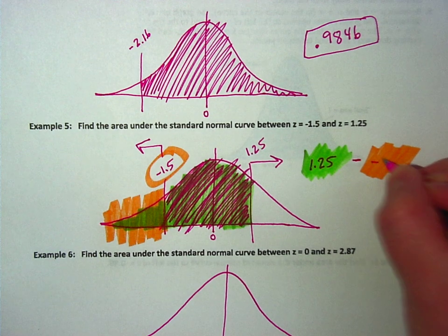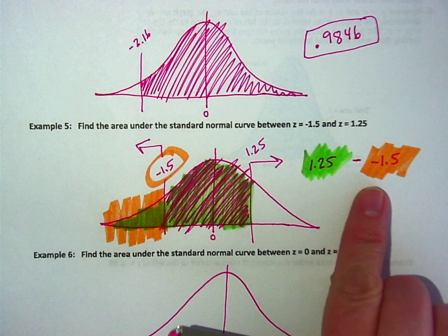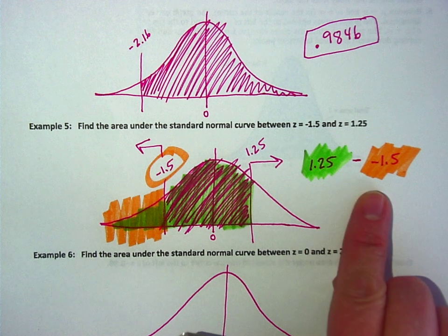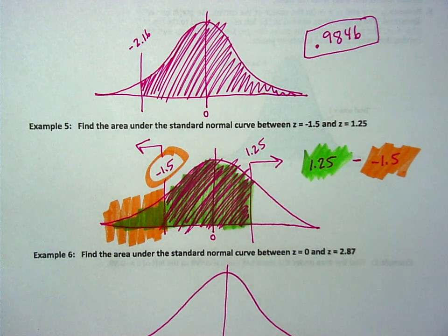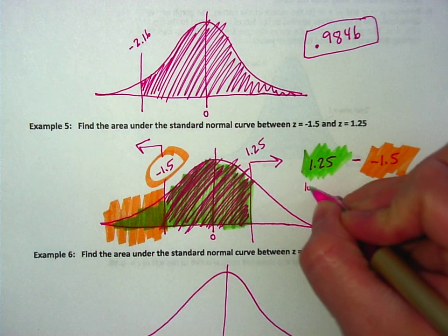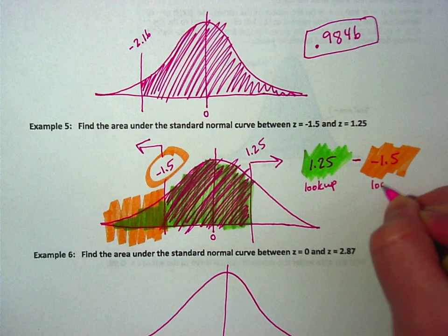So if I take the 1.25 and I subtract the negative 1.5, now again, I can't just subtract these z-scores. I have to look these both up, okay, and then subtract the things I look up. So don't just subtract these. Look them up first.